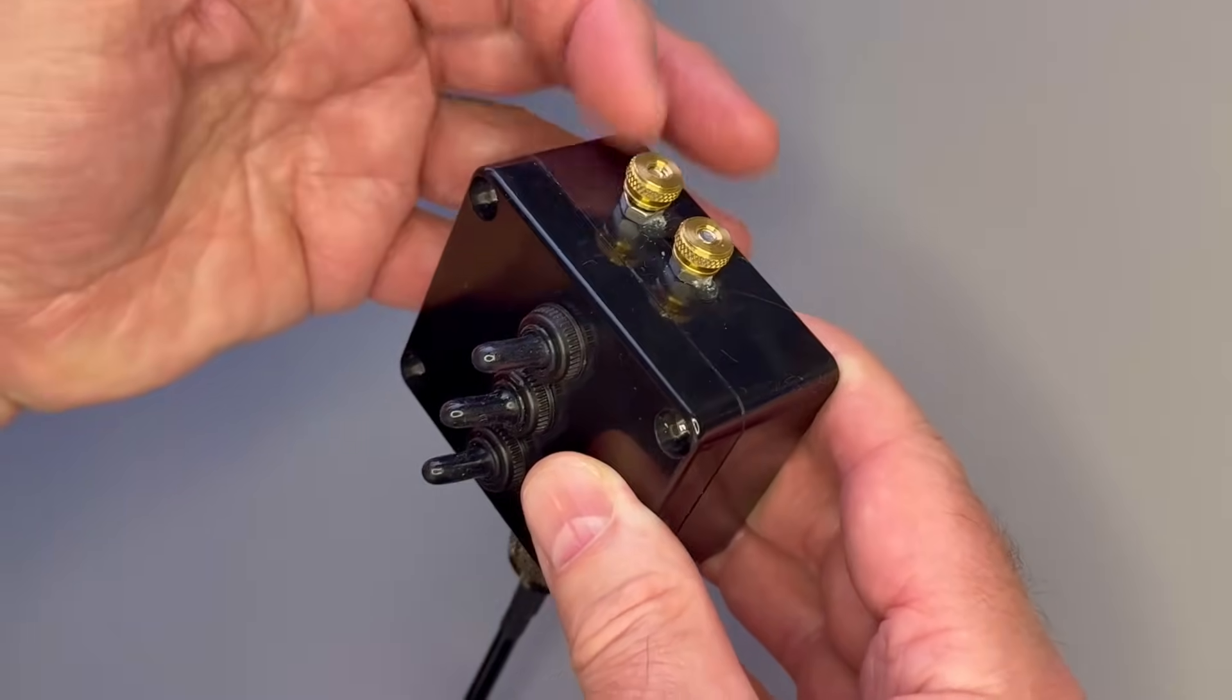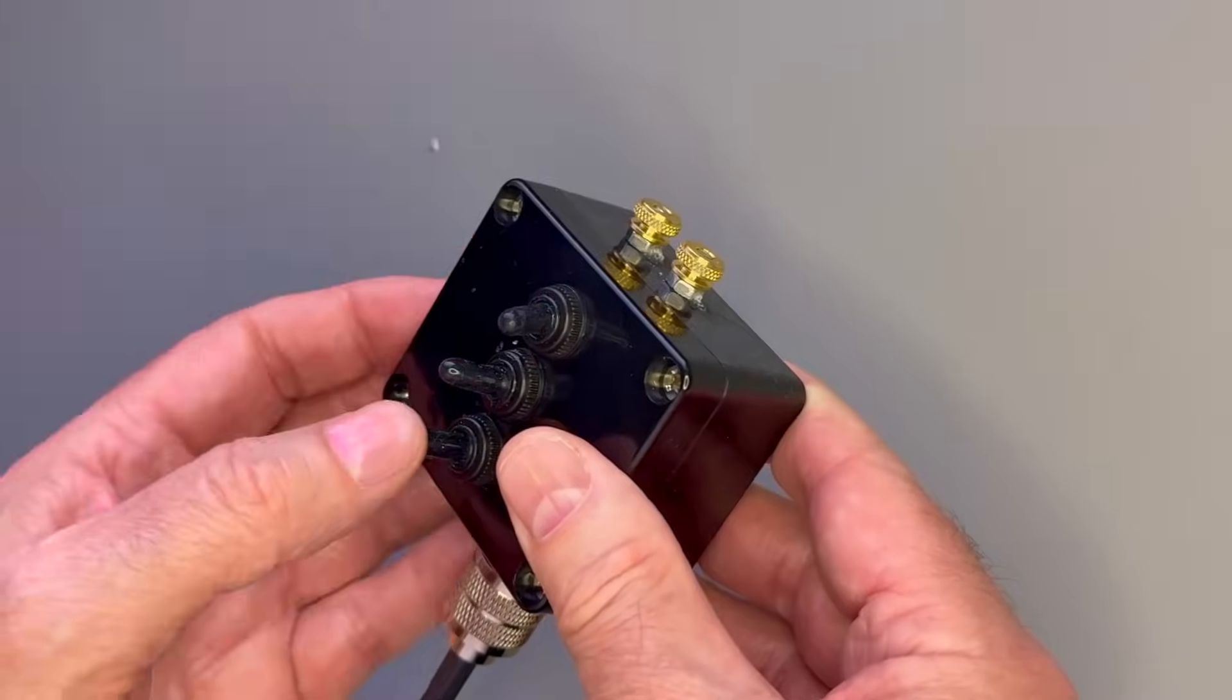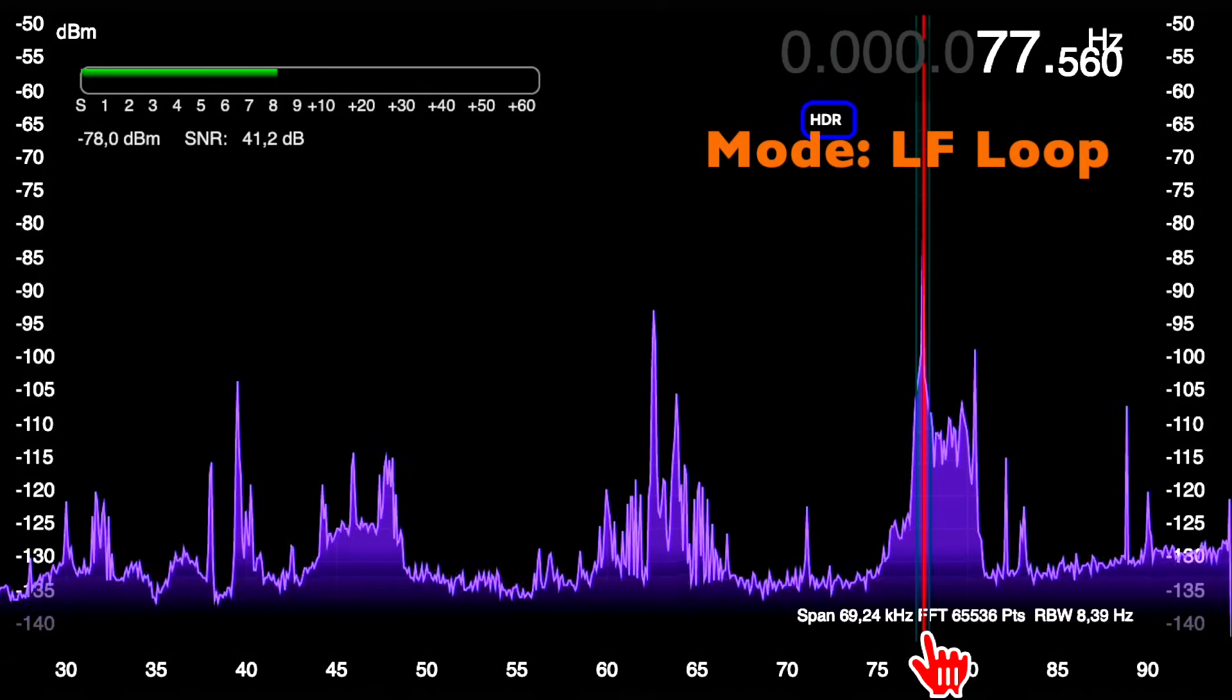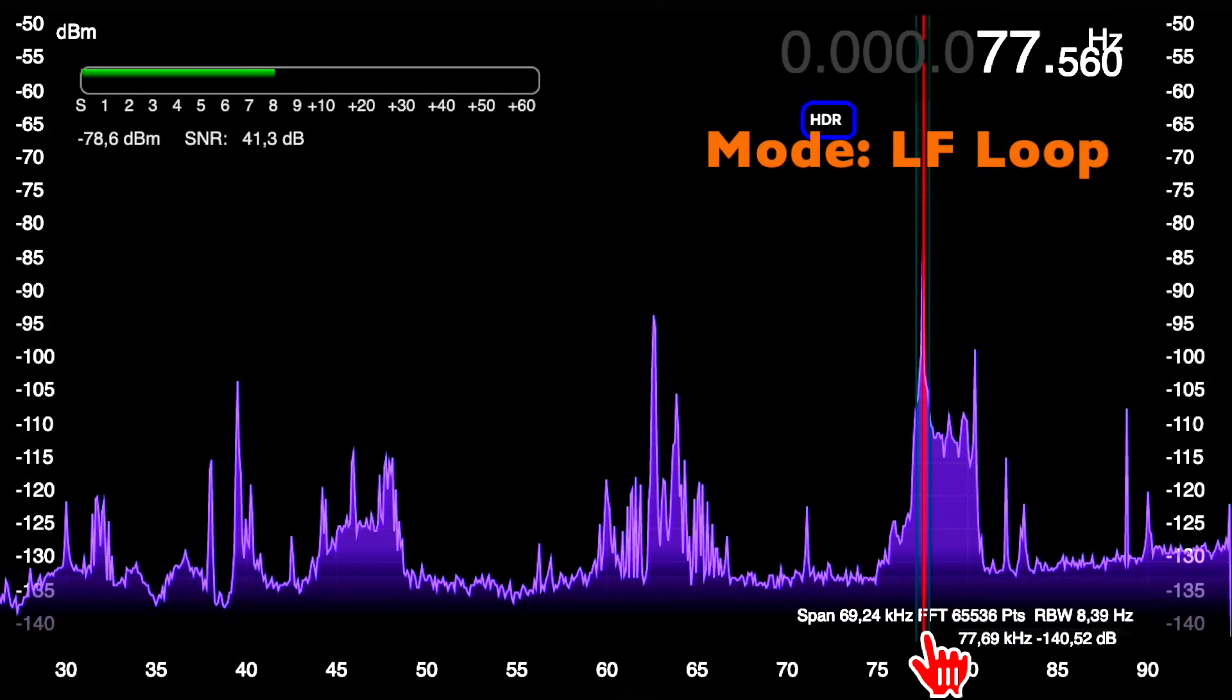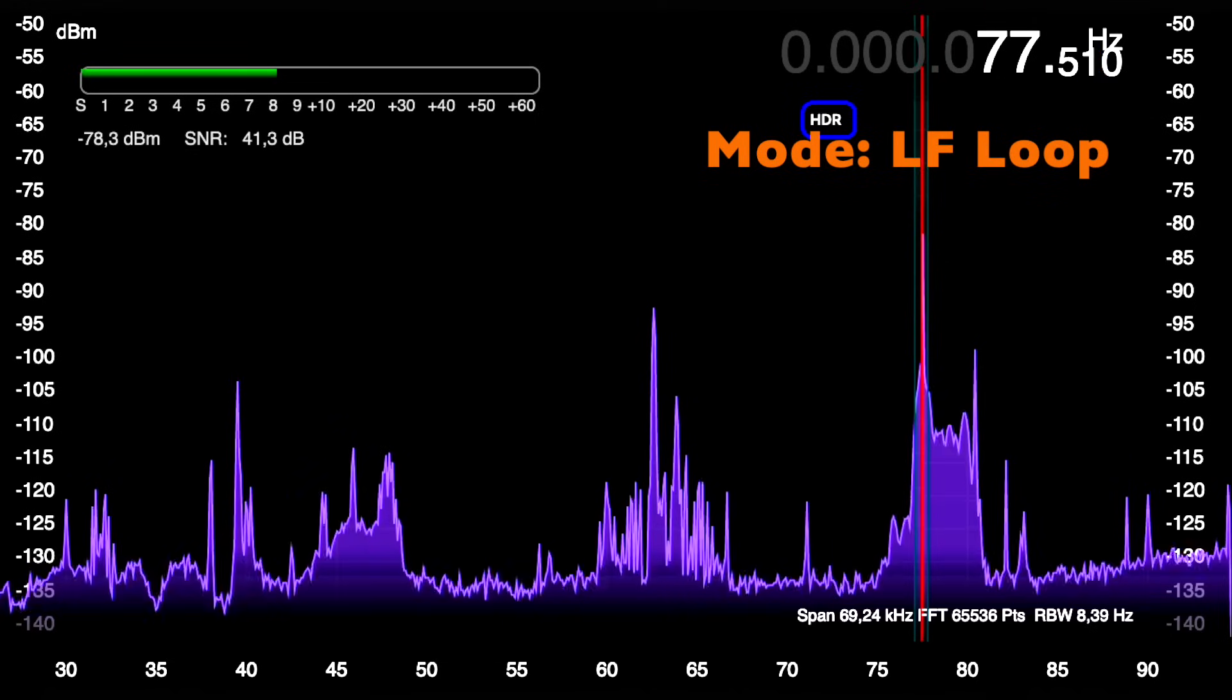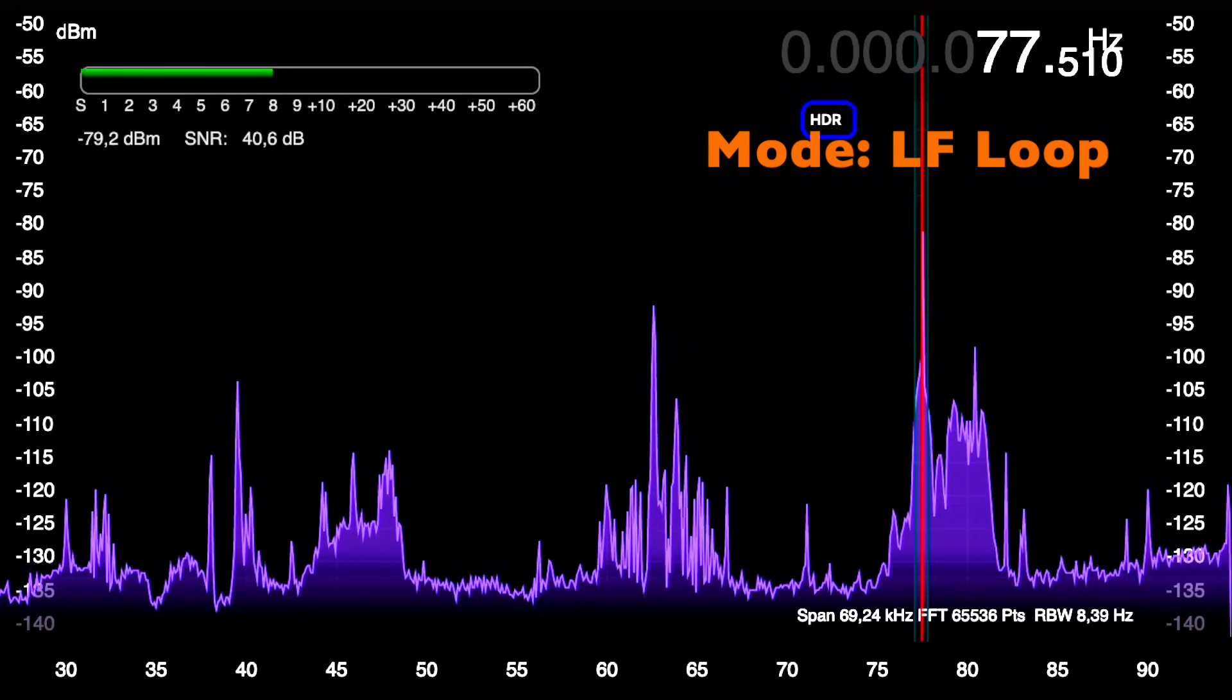The entire assembly and installation into that junction box took about three hours. This antenna is delivering superb signal levels, even though I am using it indoors. Reception of my DCF77 reference signal has improved by another 10 dB compared to the last tests.